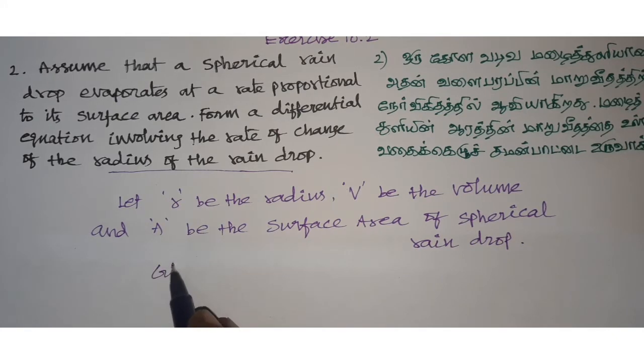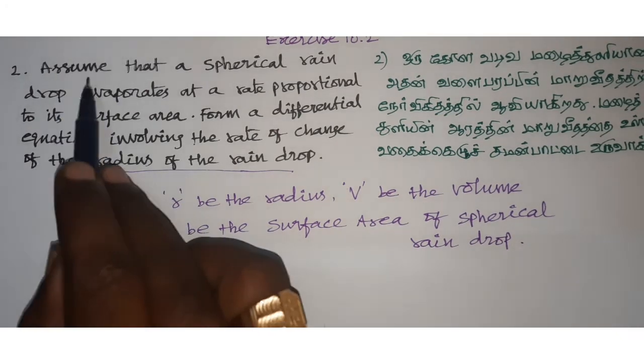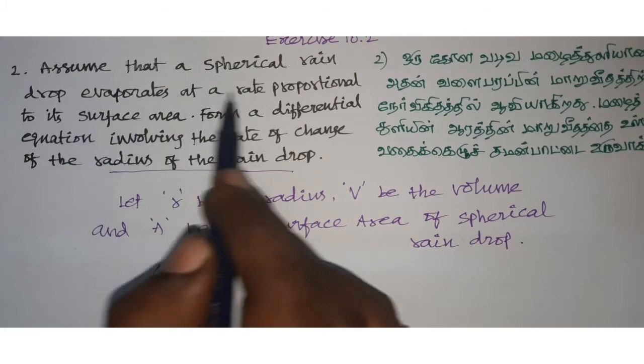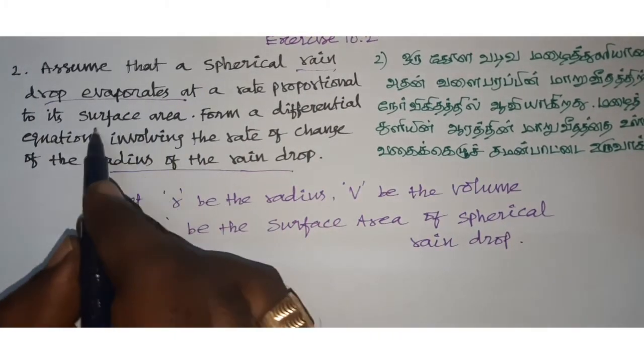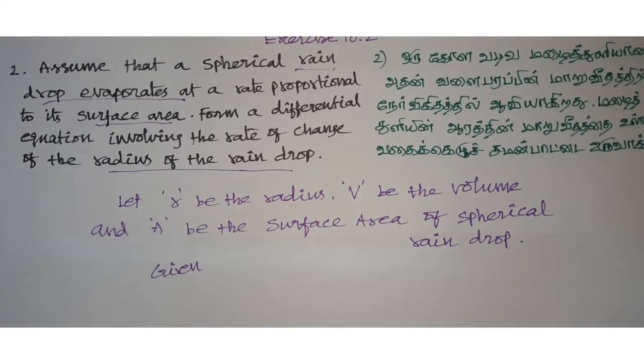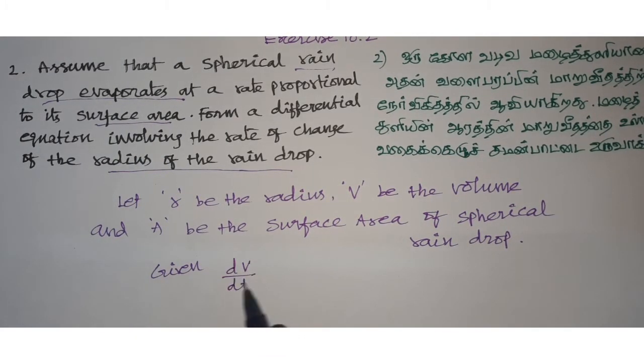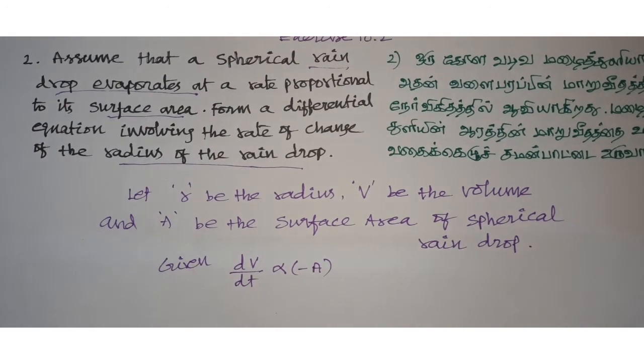First, given in the question: spherical raindrop evaporates at a rate proportional to surface area. So dV/dt is proportional to negative A. This is minus A because it evaporates, meaning it decreases.